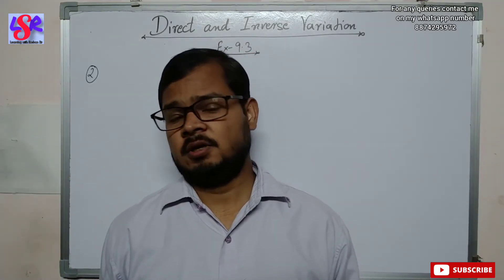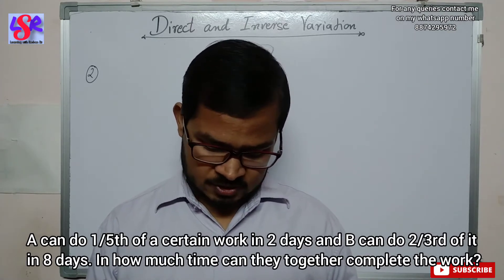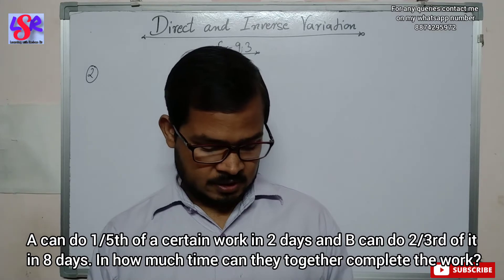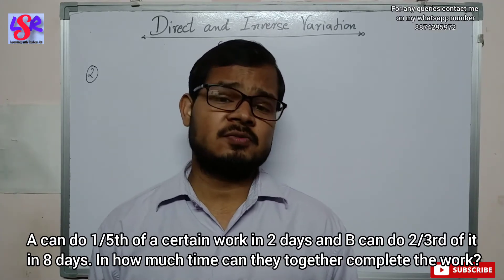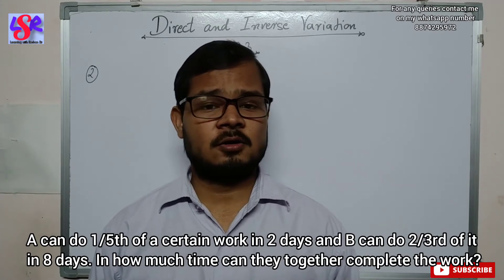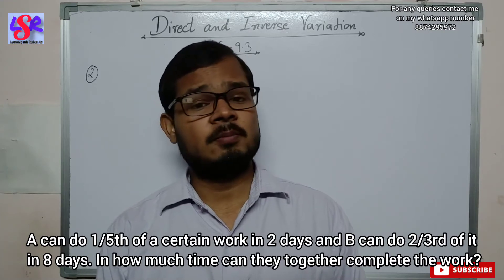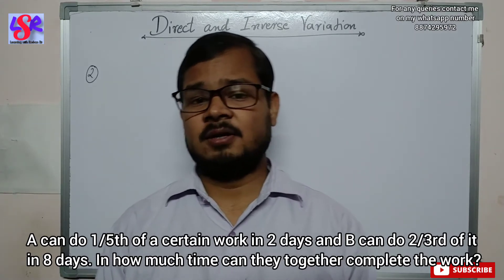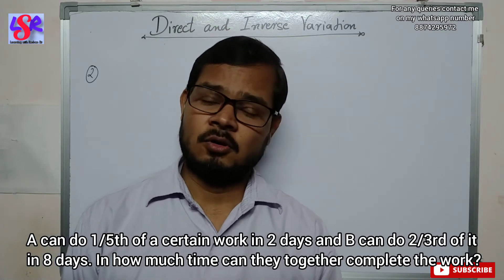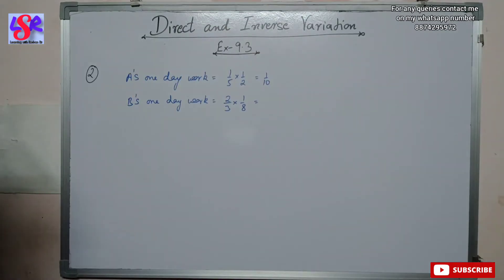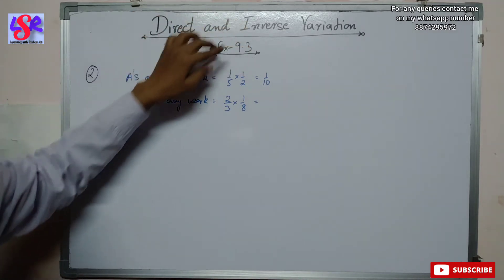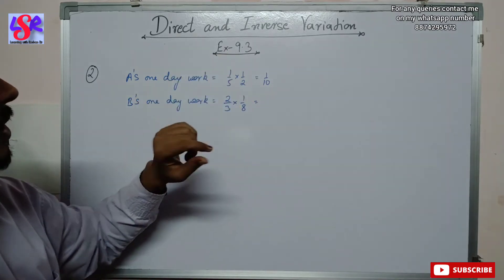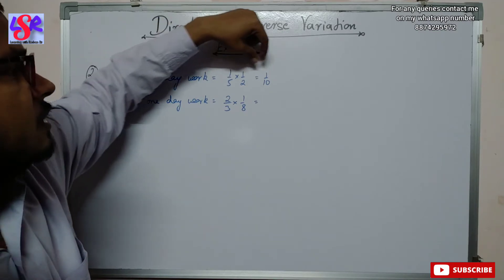Now let's do question number two. Here A can do one-fifth of a certain work in two days and B can do two-thirds of it in eight days. In how much time can they together complete the work? First, we find the one-day work of both A and B. A's one-day work is one-fifth into one-half, because one-fifth part is completed in two days, so in one day it will be half of that — which equals one upon ten.